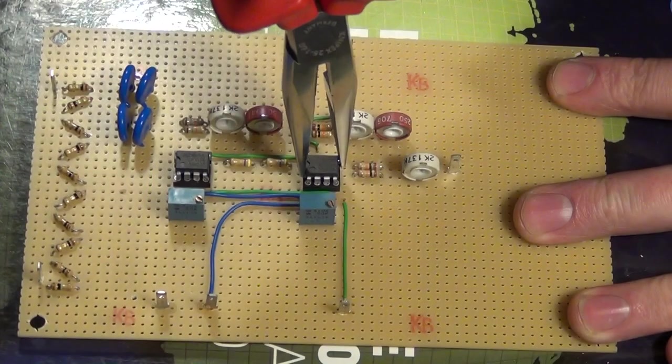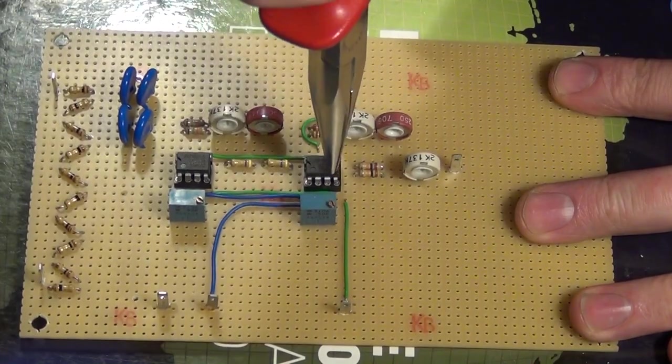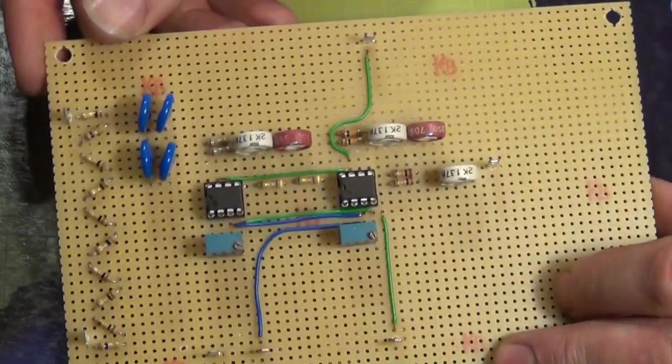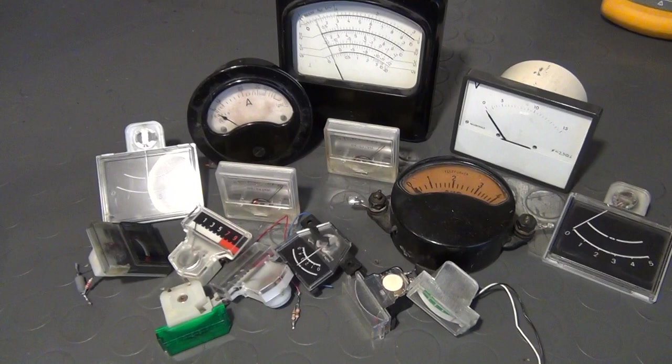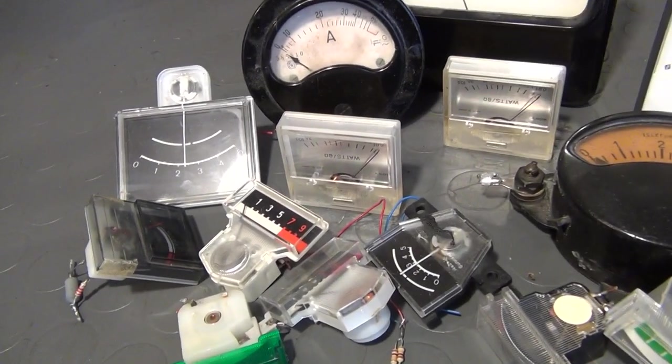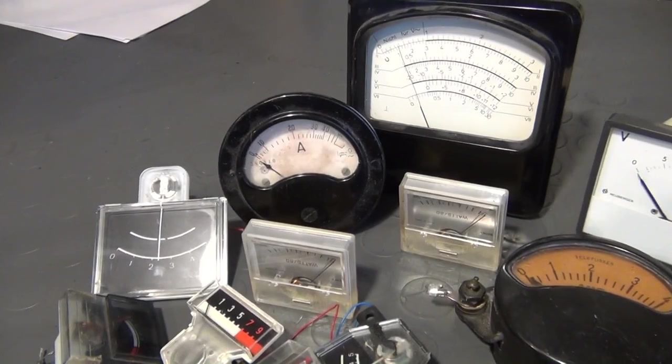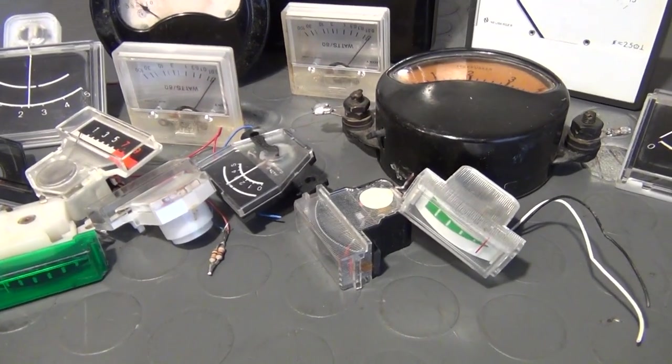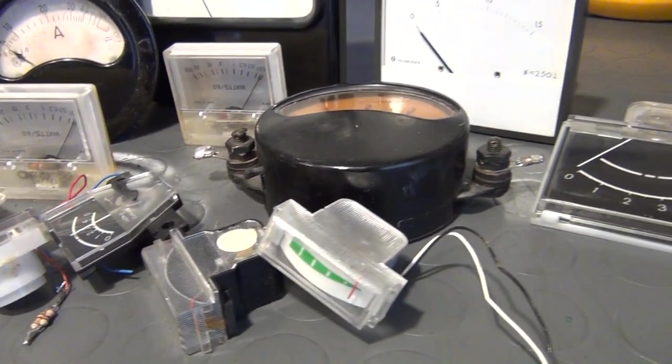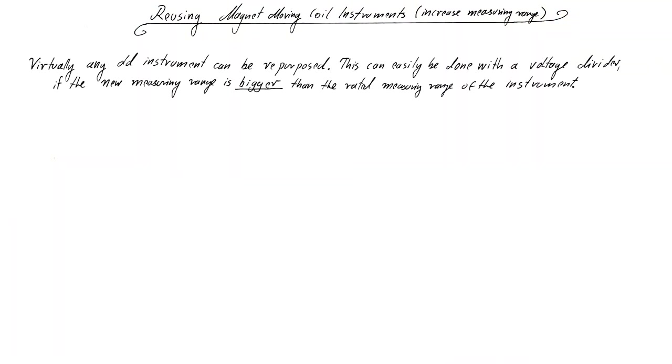It would also be great if this time no precious instrument would have to die for it. But for that, a measuring amplifier circuit must be specifically designed and built. And I take that as an opportunity to explain to you how you can use old instruments or meters to measure anything you want. Here you have an assortment of instruments which I have salvaged from all kinds of devices over the years. Some were used to measure volts, some amperes, some decibels and so on in very specific applications. But how can you reuse them for a new totally different purpose? Let me explain. Virtually all old instruments can be repurposed. This can easily be done with a voltage divider if the new measuring range is bigger than the rated measuring range of the instrument. For that you have to follow three simple steps.